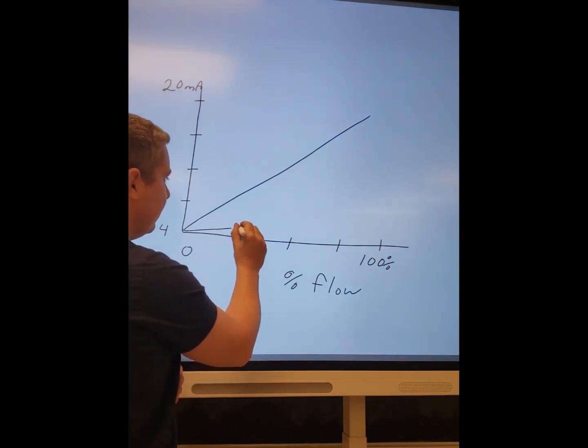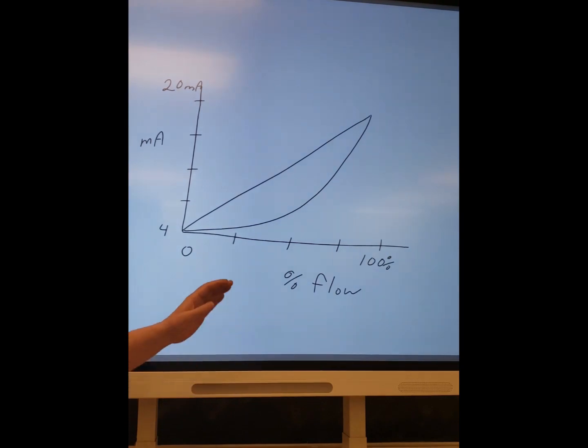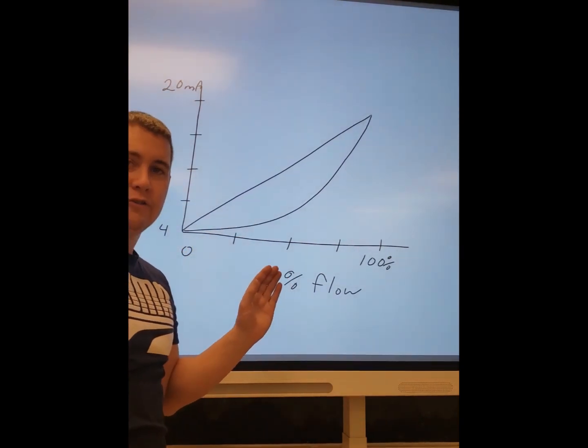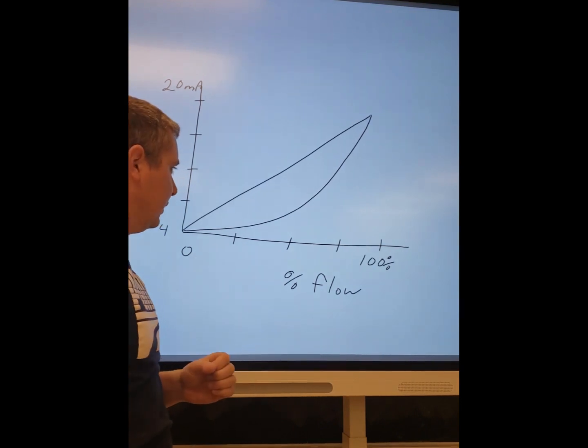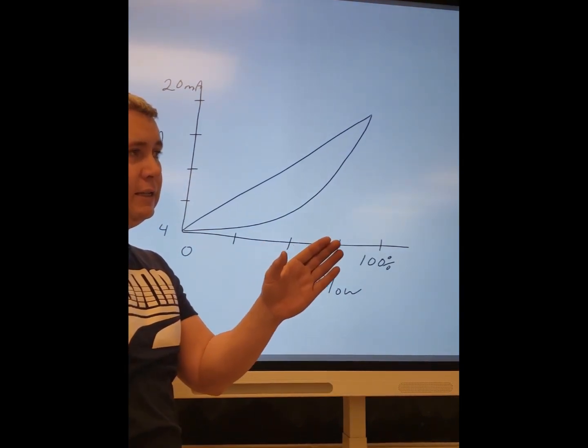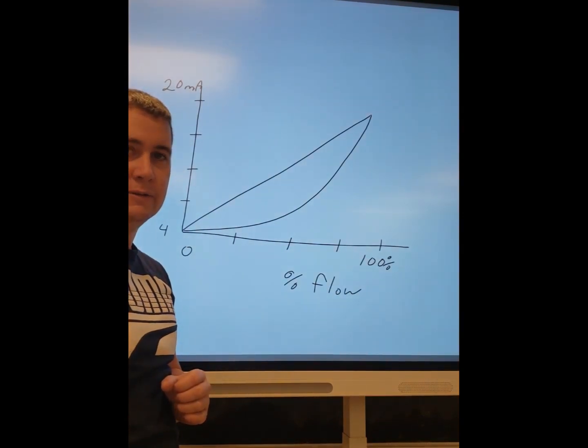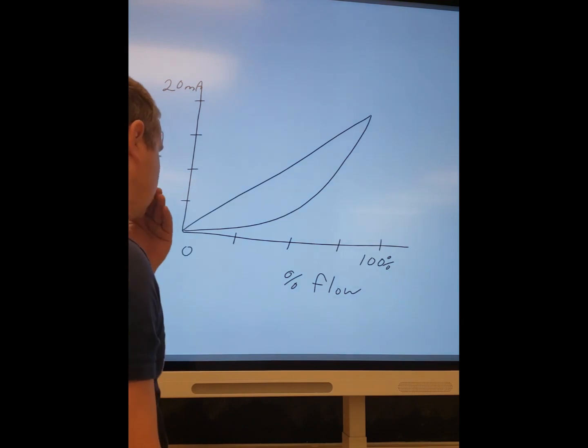But in reality with flow, because flow is not linear, we got a square rooted output. This is the natural curve of flow, flow is naturally square rooted, and so in order for us to then have a linear output we have to use a square root extractor output.